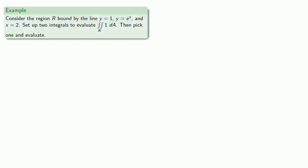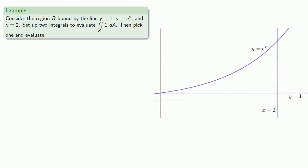Now because we have a choice of directions, we should always use whichever direction allows us to find the integral. For example, let's consider the region R bounded by the lines y equals 1, y equals e to the x, and x equals 2. Let's set up two integrals to evaluate the area of the region, then pick one and evaluate. So we'll graph the region, and since we'll probably need them, we'll go ahead and locate the intersection points as well.